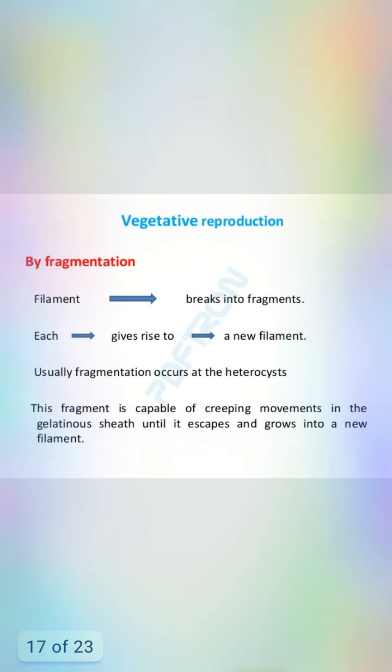Vegetative reproduction occurs by fragmentation. Fragmentation means breaking into fragments; each fragment gives rise to a new filament. Fragmentation occurs at the heterocysts. The fragments are capable of creeping movements in the gelatinous sheath until they escape and grow into a new filament.